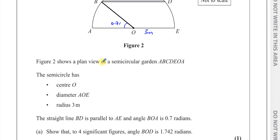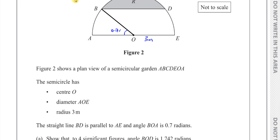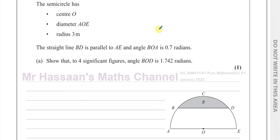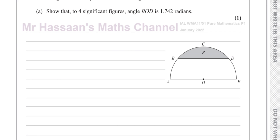Show that to four significant figures, angle BOD is 1.742 radians. So from here to here, angle BOD would be this angle over here — we have to find this angle, I'll call it theta. I have a copy of the diagram here, so let me put those values back in.